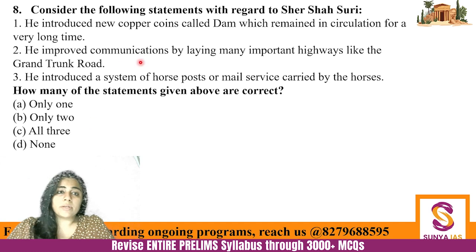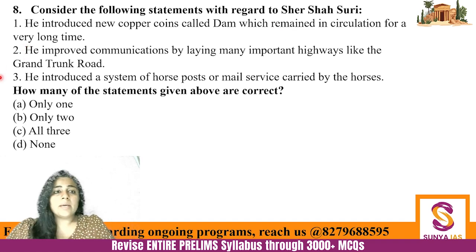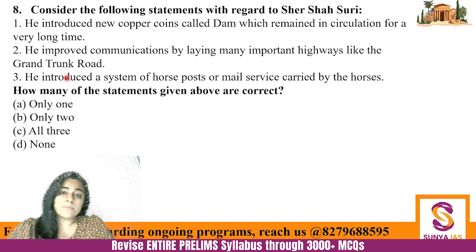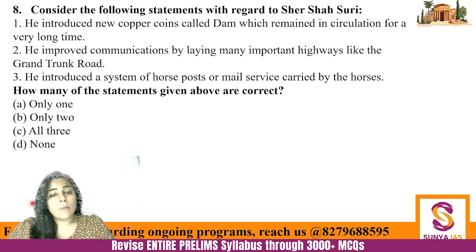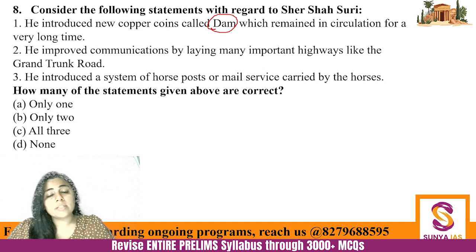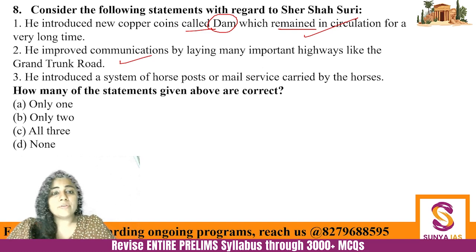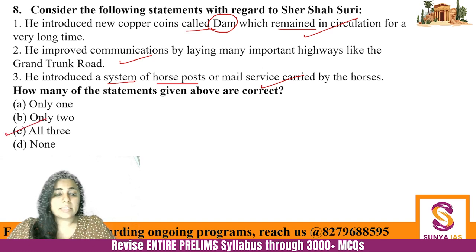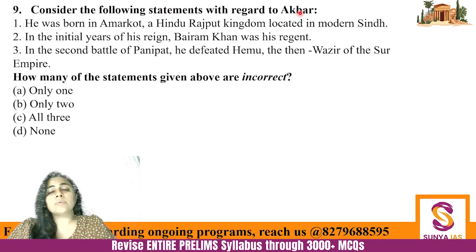Question: How many statements about Sher Shah are correct? (1) He introduced new copper coins called Dam, which remained in circulation for a long time — correct; in Hindi, 'dam' means the cost of something. (2) He improved communications by laying important highways like the Grand Trunk Road — correct. (3) He introduced a system of horse posts or mail service carried by horses — correct. All three are correct. Also, his payment of taxes was accepted in both cash and kind, not cash only.